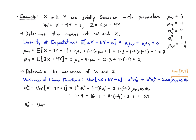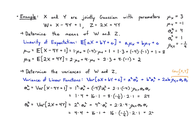For σz², the variance of 2X plus 4Y: that's 2² times σx² plus 4² times σy² plus 2 times 2 times 4 times ρxy times σx times σy, giving 4 times 4 plus 16 times 1 plus 16 times (−1/4) times 2 times 1. As a coincidence, this is also 24. They could have been different — in this case they just ended up being the same.